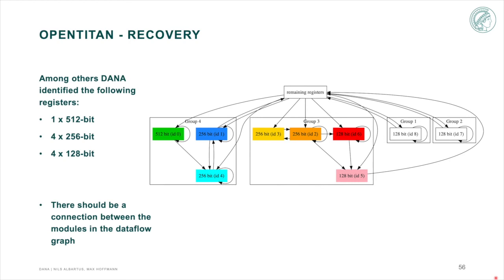Using the output of DANA, we created this data flow graph when only drawing the registers of interest. Group 1 and 2 only contain a single register each which is not connected to any other register of interest. We thus conclude that they are not part of the cryptographic modules since they all consist of more registers.